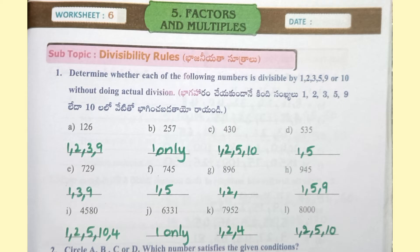729 is divisible by 1, 3, 9. 745 is divisible by 1, 5. 896 is divisible by 1, 2. 945 is divisible by 1, 2, 5, 9. 580 is divisible by 1, 2, 5, 10.